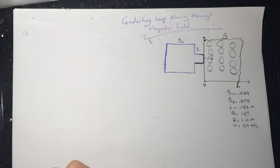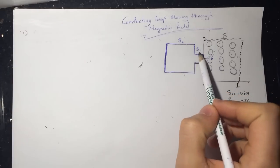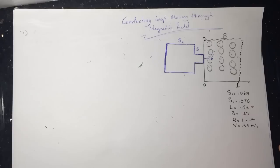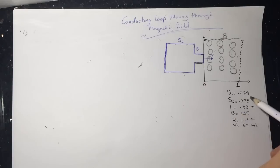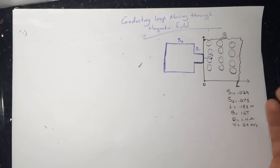Hi guys, this is a smart physics tutorial for conducting a loop moving through a constant magnetic field. So we have this loop, and this is a square entering a constant magnetic field. We have the length of this magnetic field, the strength of this magnetic field, the resistance of this loop, and the velocity that the loop is entering the magnetic field.